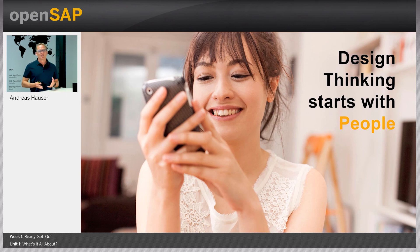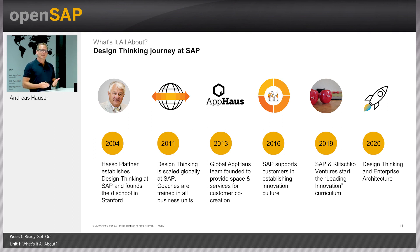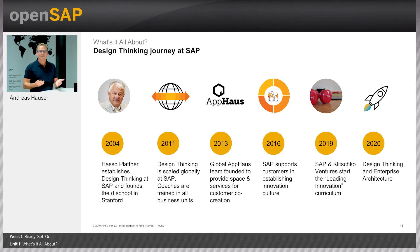Design thinking starts with people. We start by stepping into the shoes of the target audience. SAP's journey started in 2004 when Hasselblattner went on stage at Sapphire and said, 'SAP now does design thinking.' He mentioned that when they founded the company, as a developer he was sitting at the customer beside the end user, programming, showing it to the user, and iterating. It wasn't called design thinking at the time, but design thinking reminded him of how he started the company.